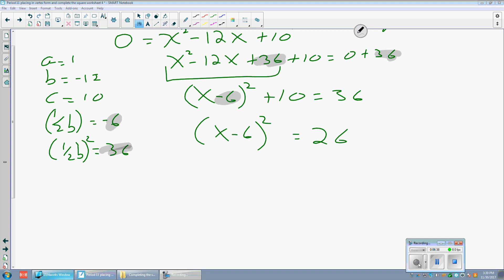I then subtract 10 from both sides to get 26. I take the square root of both sides to get rid of the square. And I solve for x, getting the final answer. x equals 6 plus or minus the square root of 26.